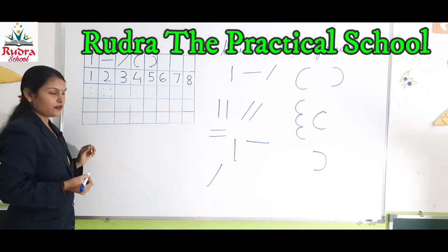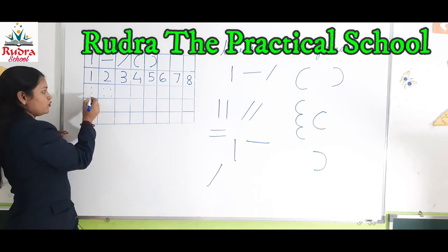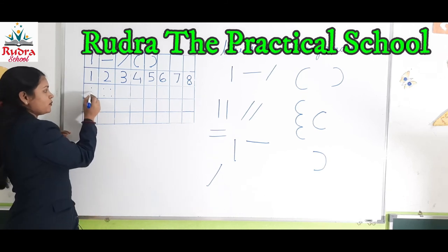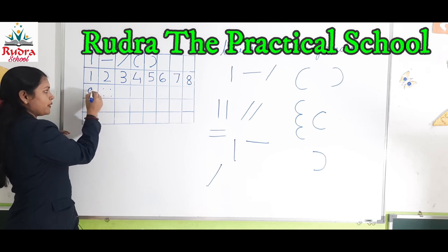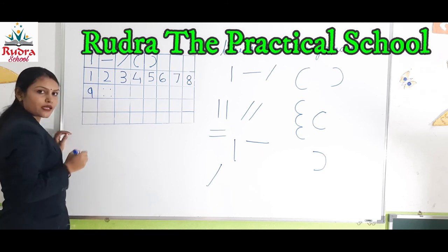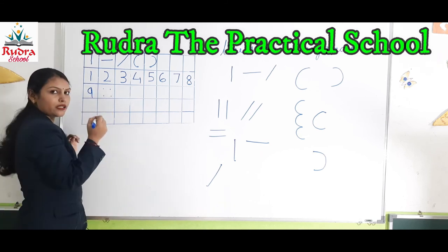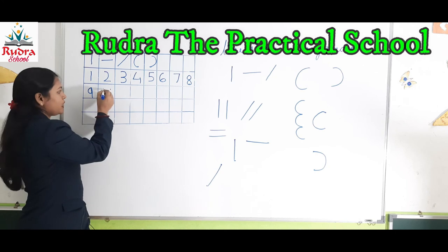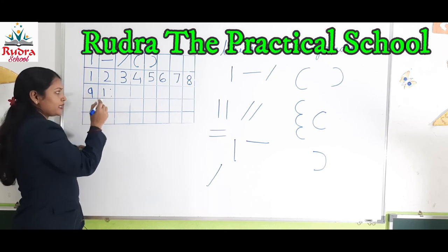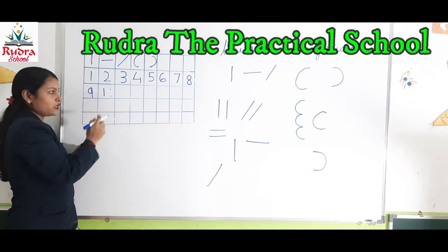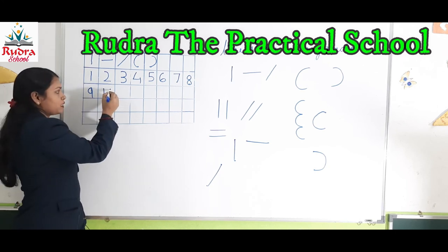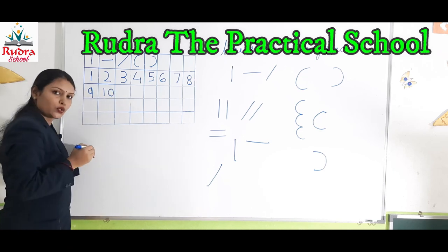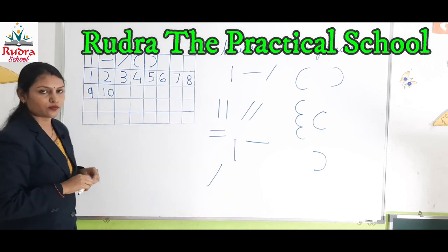Now we will write number nine with the help of two dots. Start from here, go up and down — this is number nine. Now we will write number ten with the help of four dots: a standing line for number one and a circle — this is number ten. Thank you.